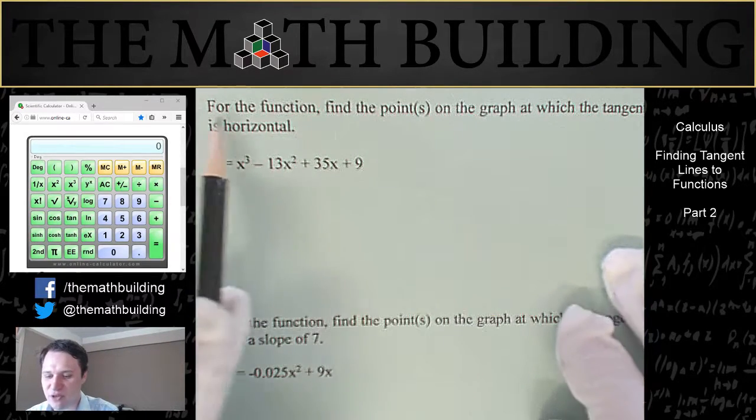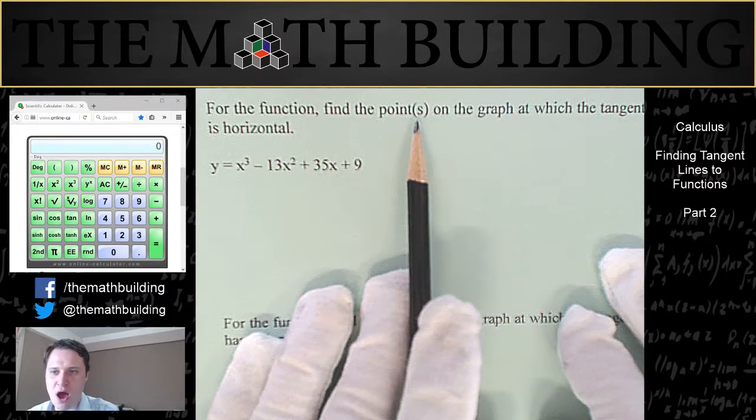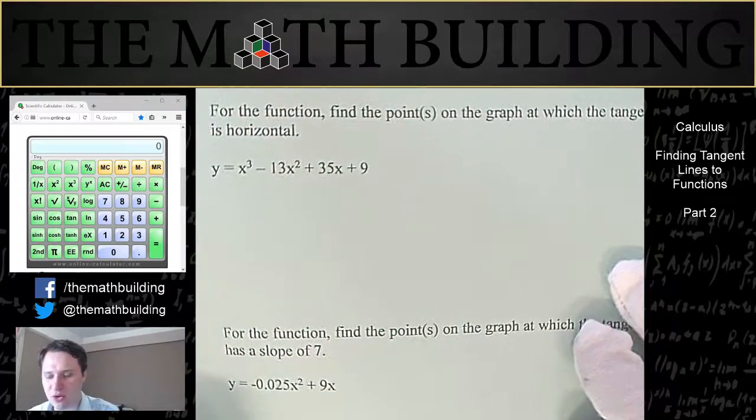And it wants to know, for the function, find the points, and there may be more than one, on the graph at which the tangent line is horizontal.